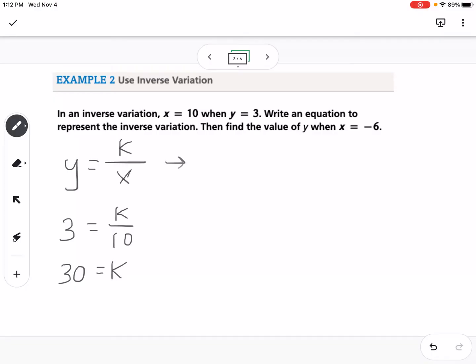That means our equation is y equals 30 over x. So that equation models this information, and then it asks to find the value of y when x equals negative 6. We would do 30 divided by negative 6, and we get that y equals negative 5.